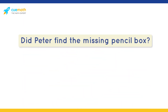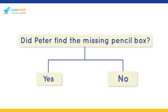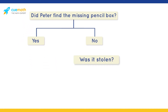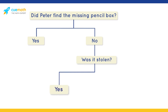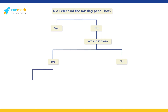Here's the first question: did Peter find his pencil box? The answer is no. Now there are two possibilities — someone could have stolen the pencil box, or Peter could have misplaced it. If we assume the pencil box was stolen, we could say Eva stole it if we were to rely on Adam's claim that Eva once stole a lunchbox. Alternatively, we can say someone else stole the pencil box since it was lying unattended.